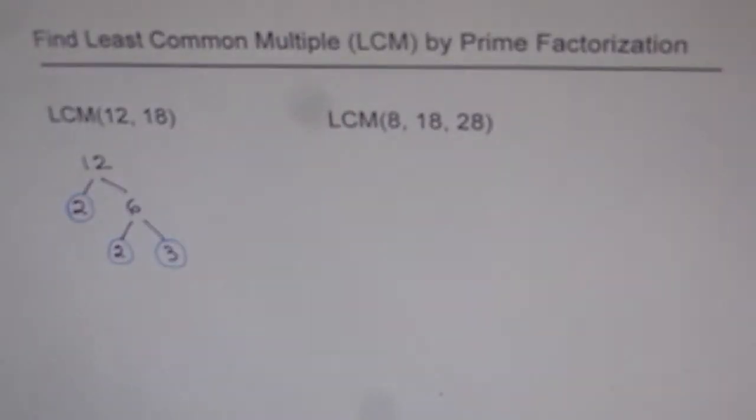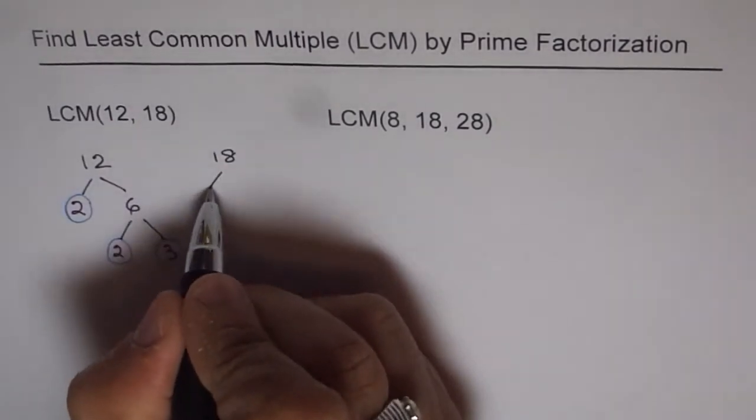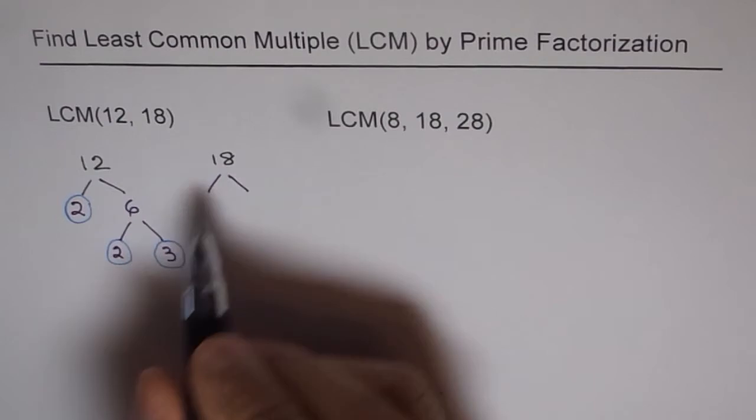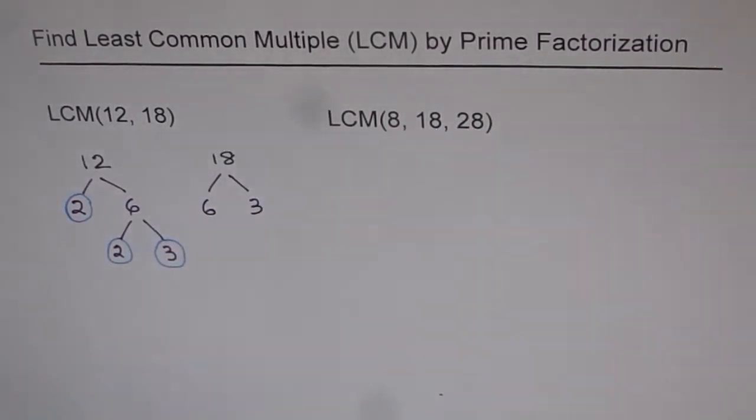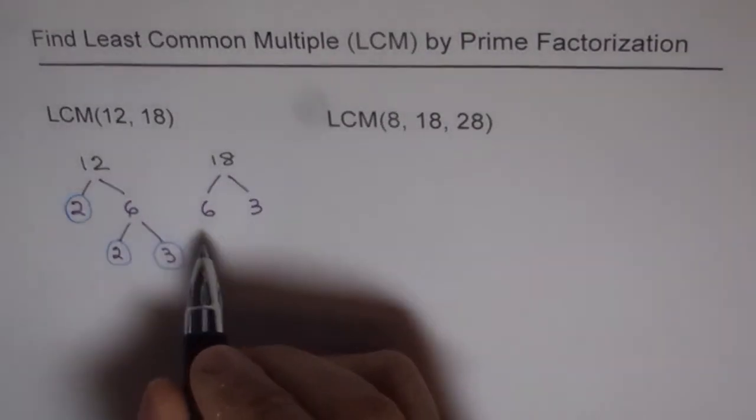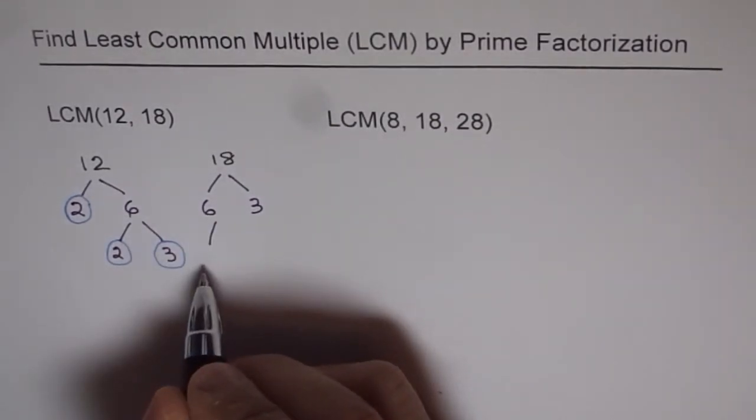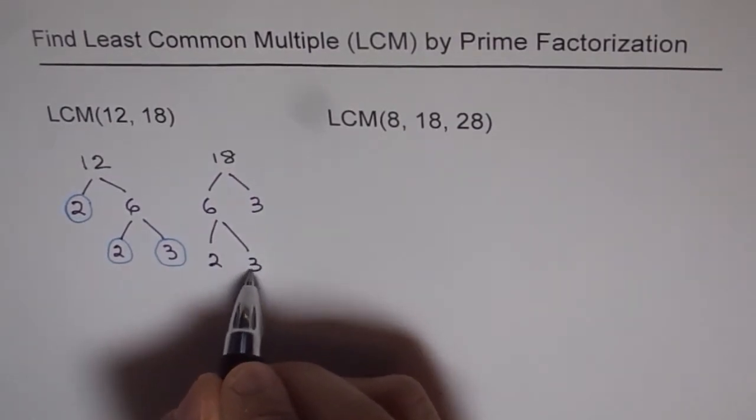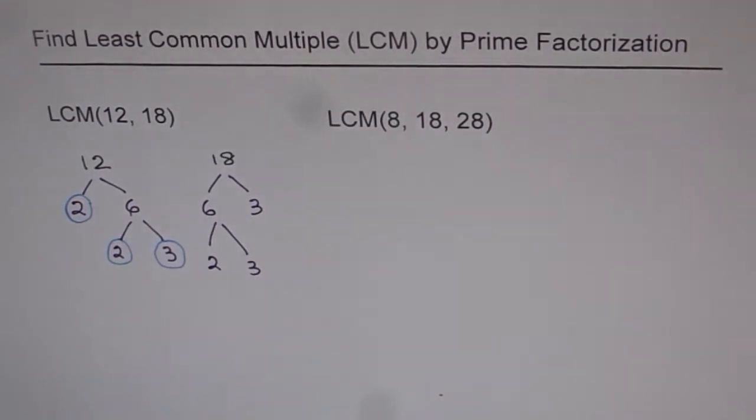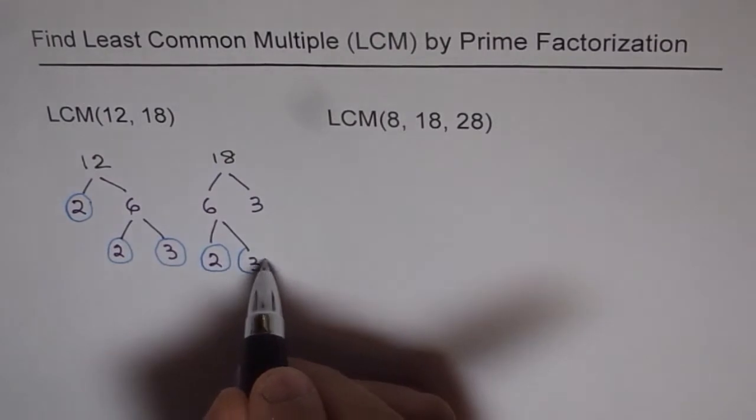And now, let's do prime factorization of 18. For 18, as you know, we can start anyway. You can start with 2 times 9, or you can do 6 times 3. It doesn't matter. Either way, we get the same result. When you do factorization of a number, you always get a unique set of factors. So, the answer will always be exactly the same. 6 will be 2 times 3. Now, 3 is a prime factor, so we just leave it there. Now, you circle all your prime factors.